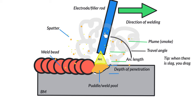Here we have our travel angle. Travel angle and work angle are two different things — work angle would be the perpendicular angle to the travel direction. For stick welding, about 10 to 15 degrees off of 90 works great. This is the plume — the smoke coming up. Keep your face out of the plume. Don't breathe that stuff in; it's not good for anybody.